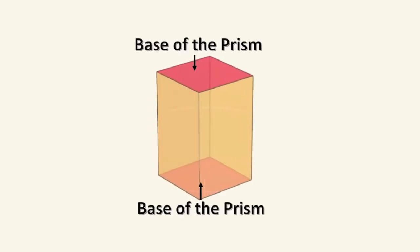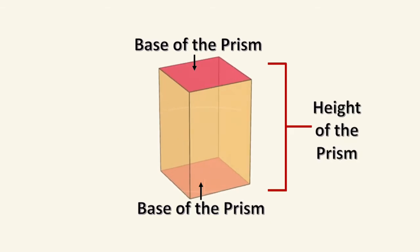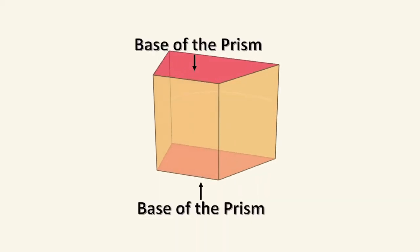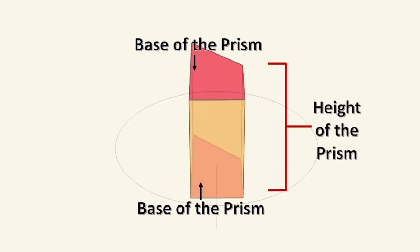On prisms you always have two bases which are parallel to each other and then the distance between those bases is referred to as the height of the prism. So in this trapezoidal prism I have two trapezoids as my bases and the distance between them is the height of the prism.